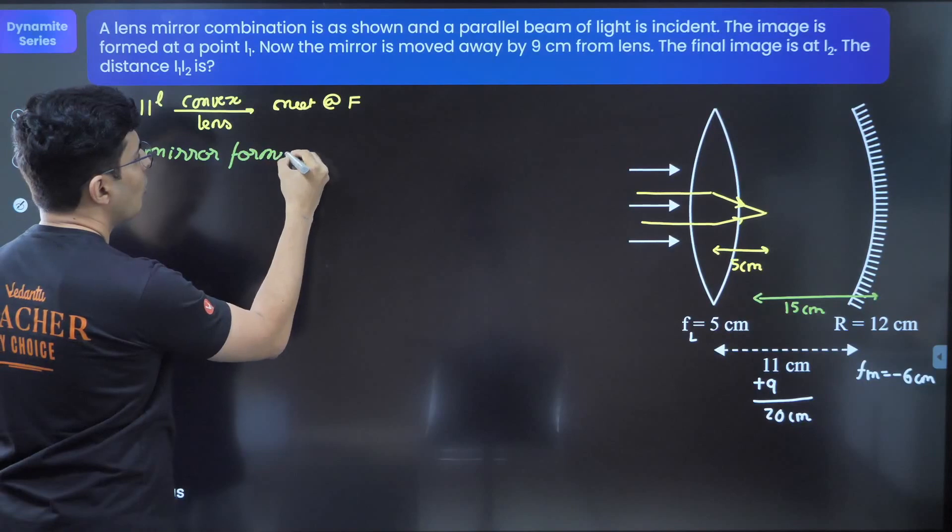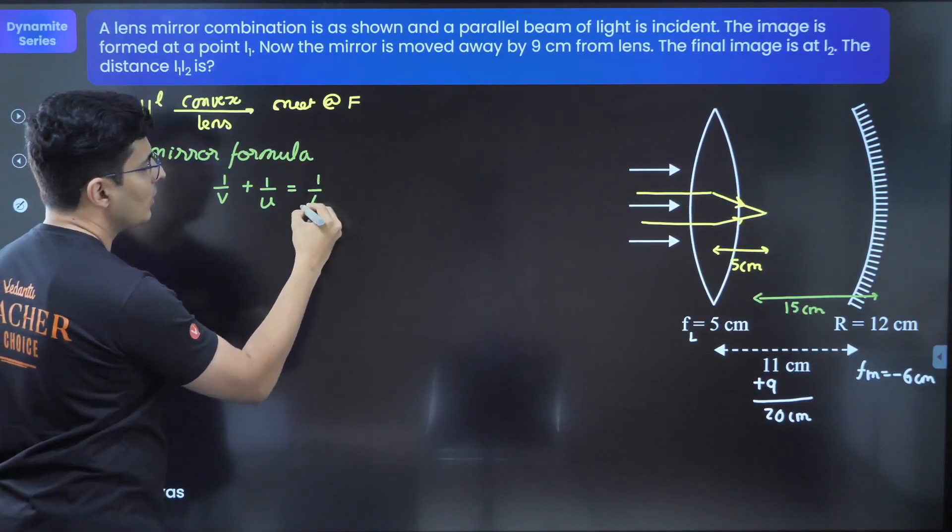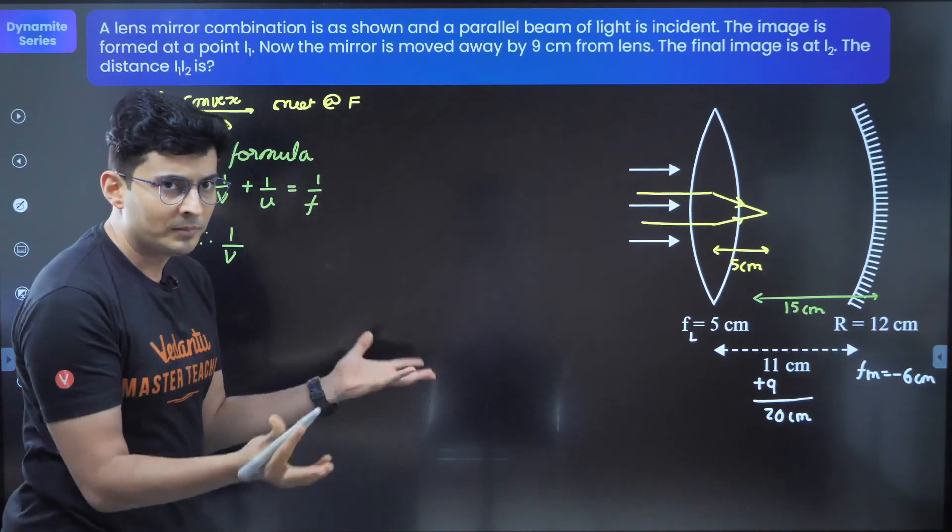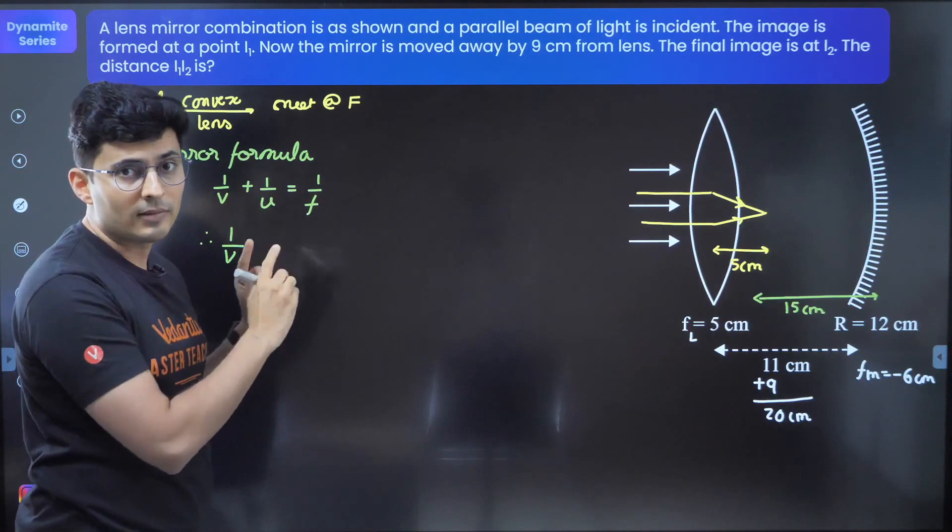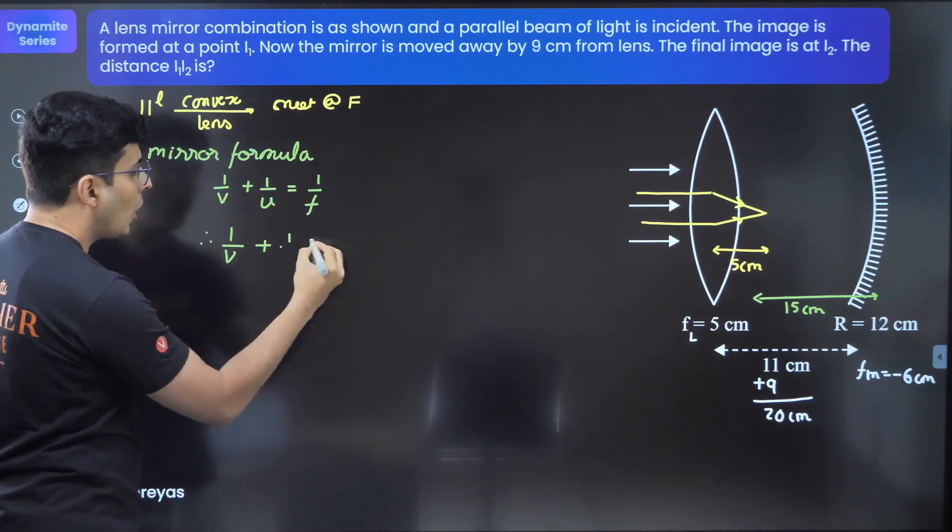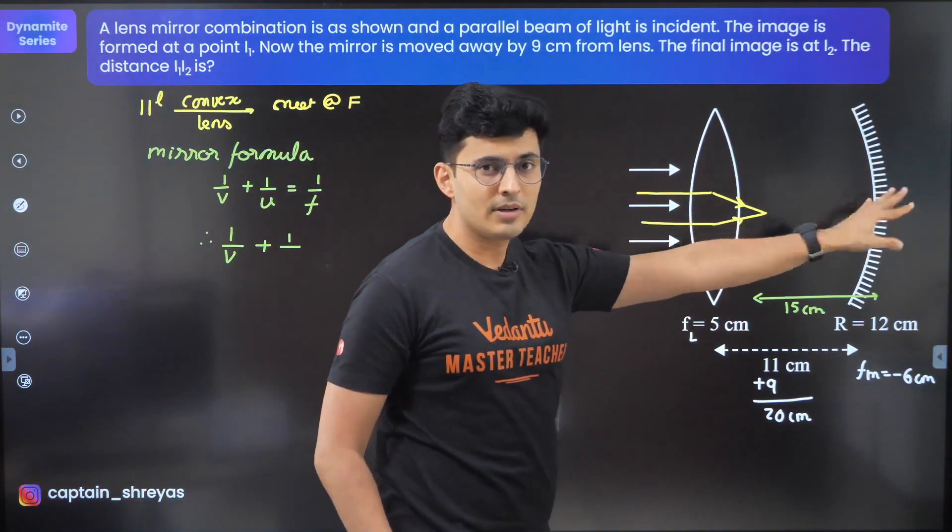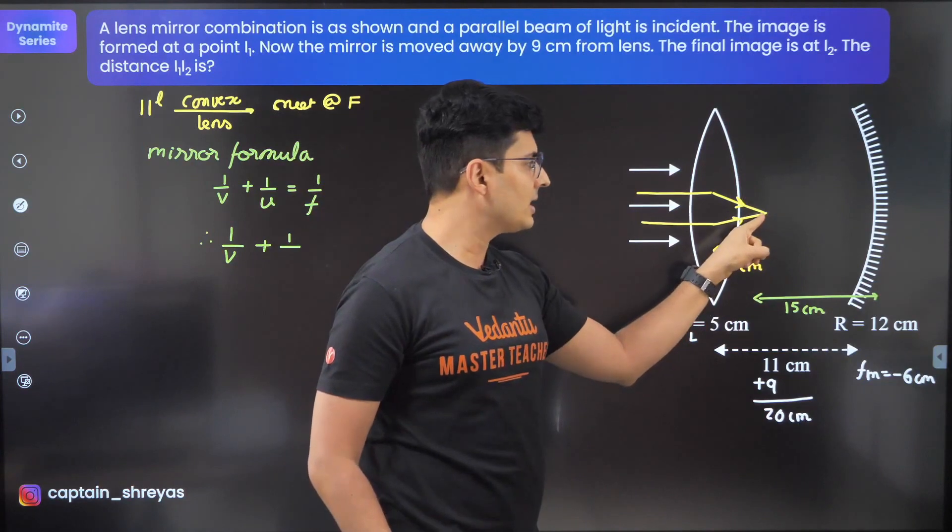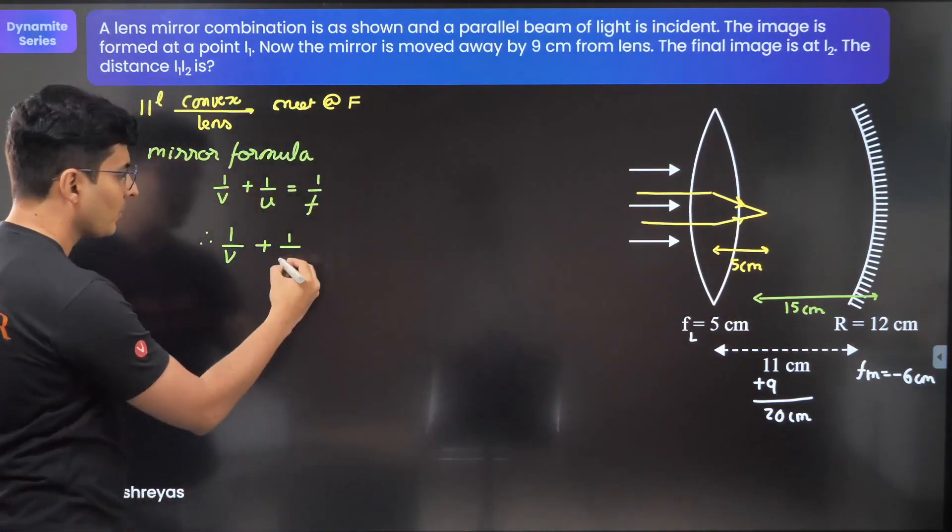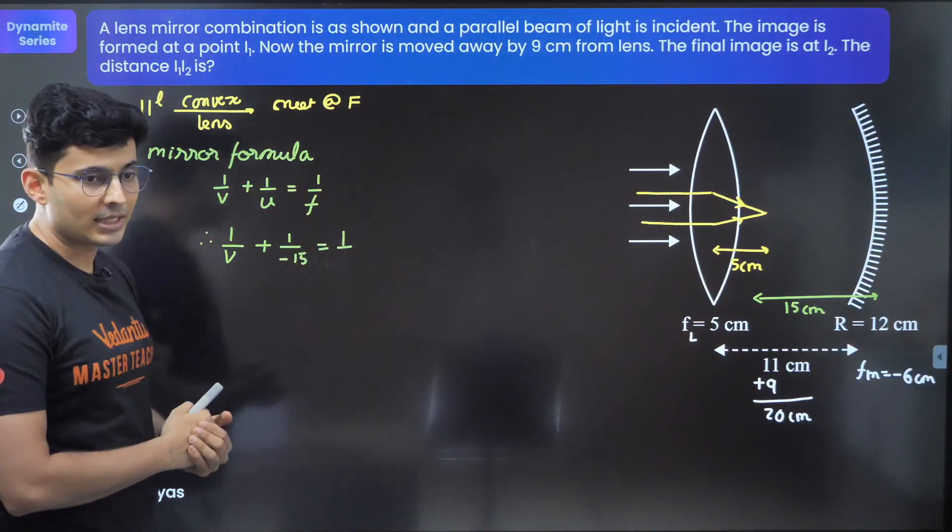Let's use the mirror formula: 1/v + 1/u = 1/f. I don't know where the image is formed. I will complete the ray diagram only after writing this formula. Object distance: be careful, this is the mirror, the rays are going like this. That side is positive, this side is negative. The object is on the negative side, so this is minus 15.